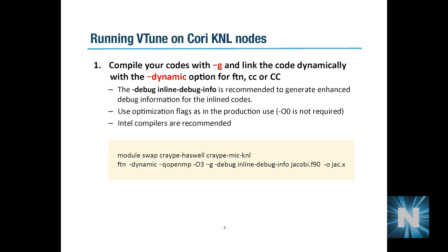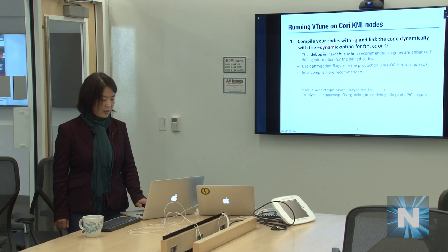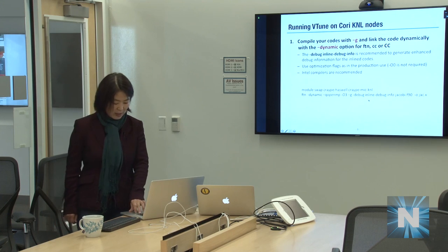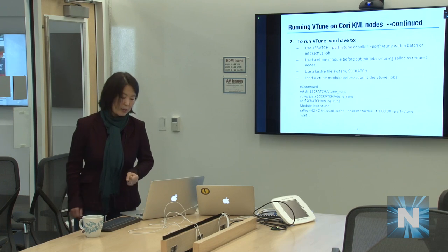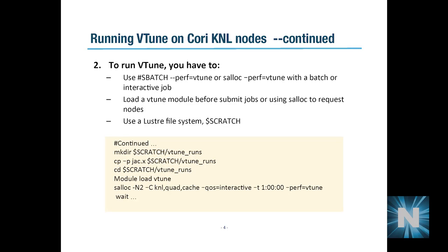Here's a skeleton compilation example for a hybrid MPI/OpenMP code. As already shown, to compile for KNL you need to swap the default craype-haswell module to the craype-mic-knl module. Then use -dynamic, -g, and the -debug inline-debug-info option with our compiler wrappers to build your code.